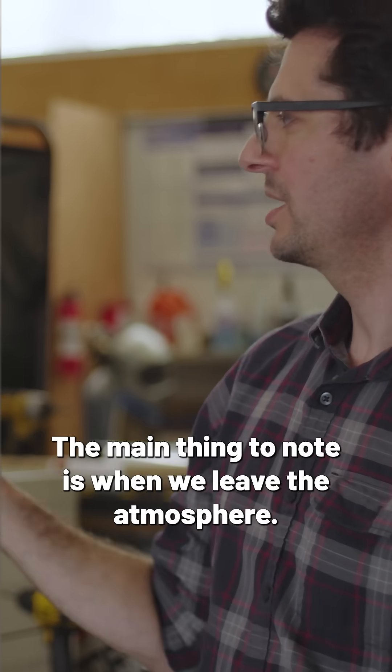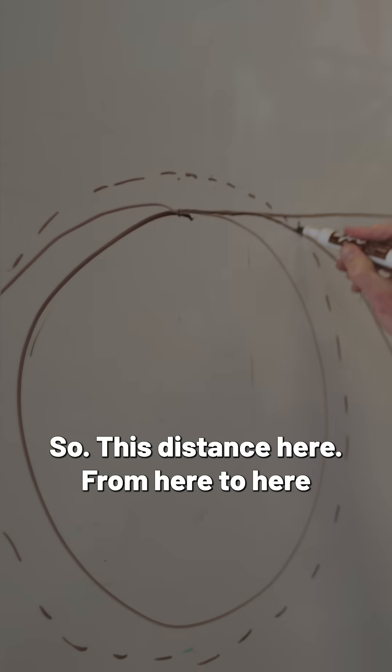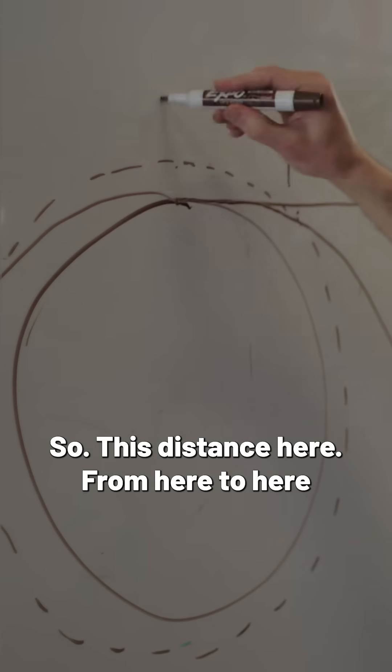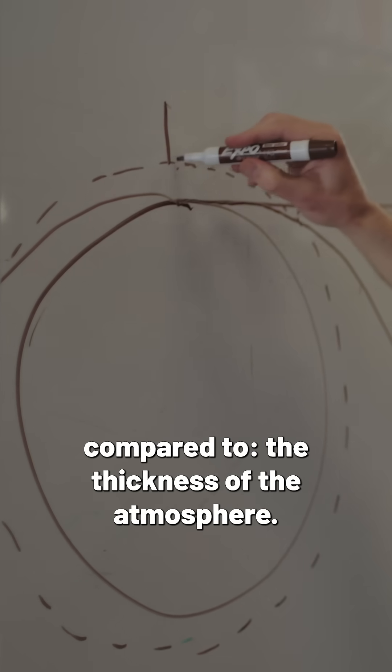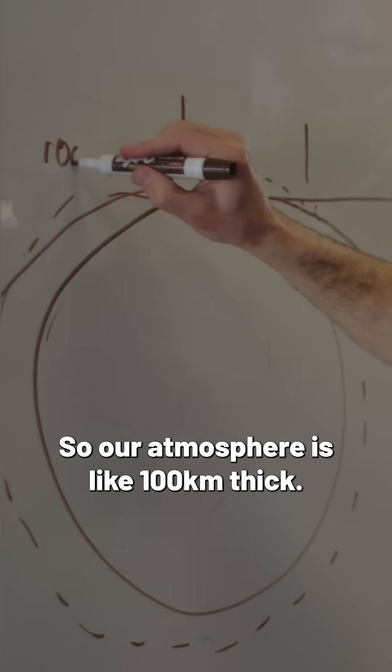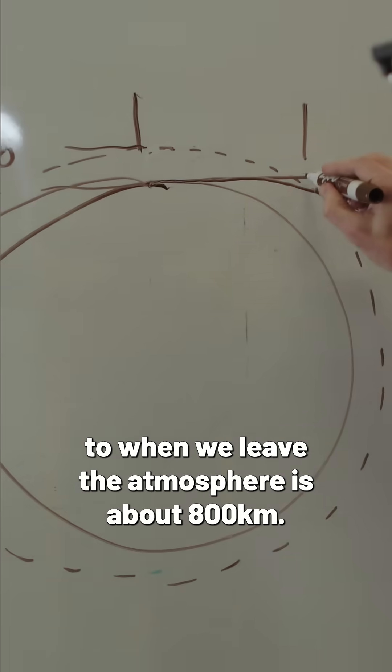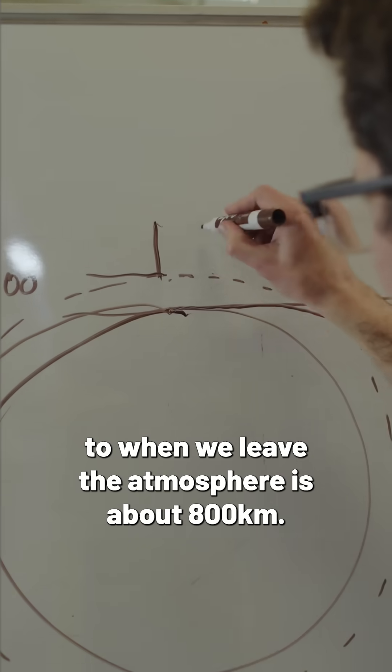The main thing to note is when we leave the atmosphere. So this distance here from here to here compared to the thickness of the atmosphere. So our atmosphere is like 100 kilometers thick and this distance from our launch point to when we leave the atmosphere is about 800 kilometers.